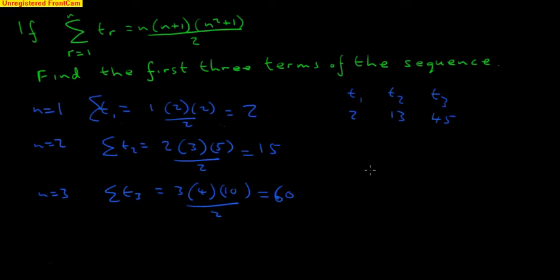So the first three terms of this sequence are 2, and then 13, and then 45. And you can see that makes sense for the sums that we're getting. 2 plus 13 gives you 15, plus 45 gives you 60.